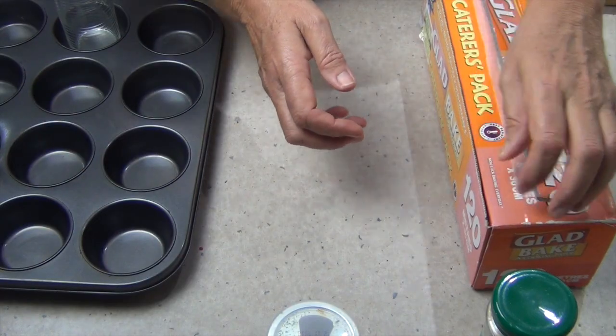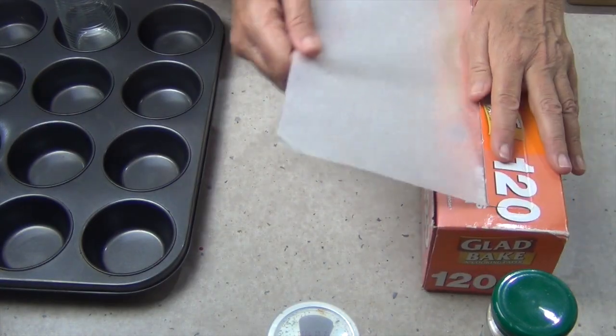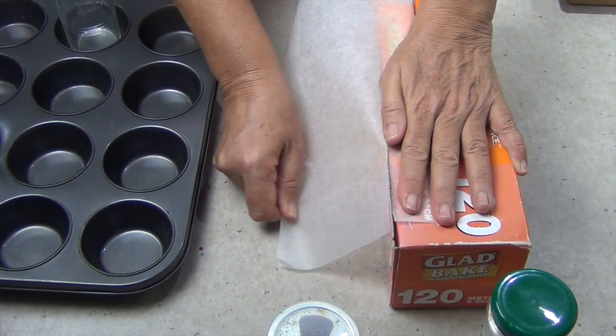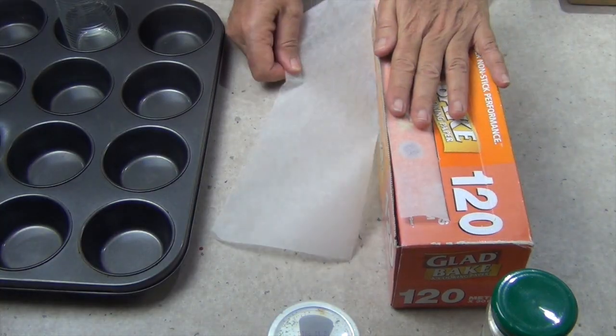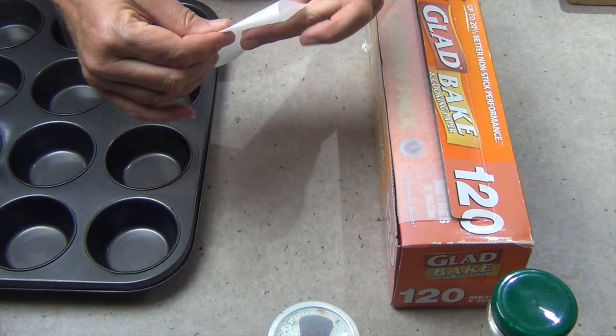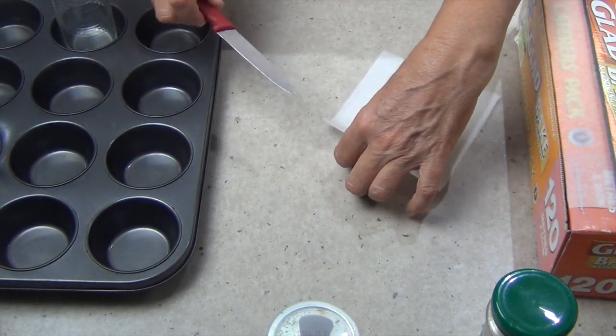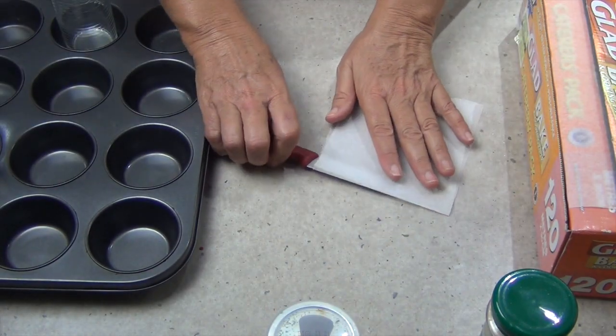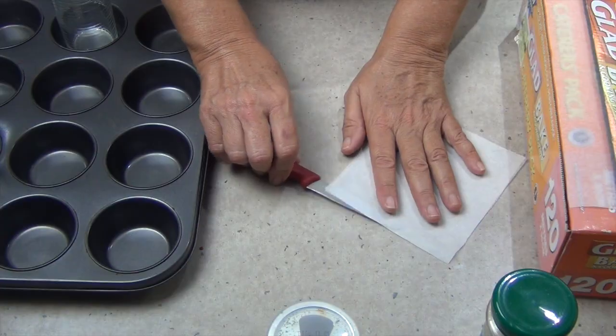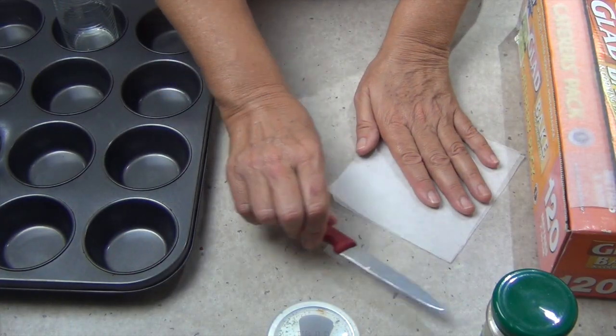And now I'm going to do this by eye but you need a 125 millimeter or five inch square of the baking paper, parchment paper. You can either do it with a knife quite easily without harming yourself. You could use scissors if you like but it's pretty quick and simple to do.